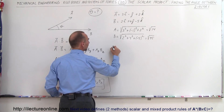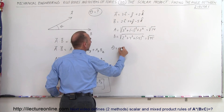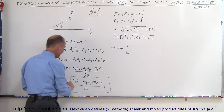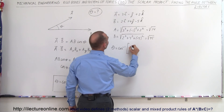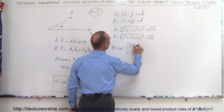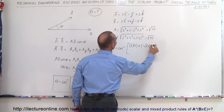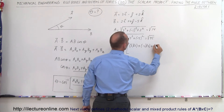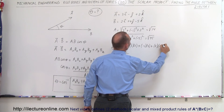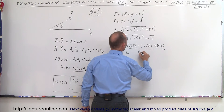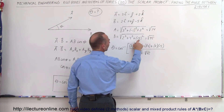So therefore, theta is equal to the inverse cosine of AX times BX, which is 3 times 2, plus negative 1 times 4, plus 2 times negative 5, all divided by the square root of 14 times the square root of 45.